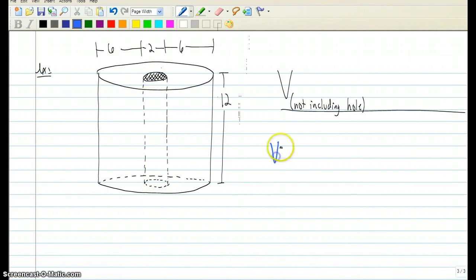So the volume of this shape is going to be the volume of the big cylinder before anything was cut out minus the volume of that small cylinder that got taken out of the middle.